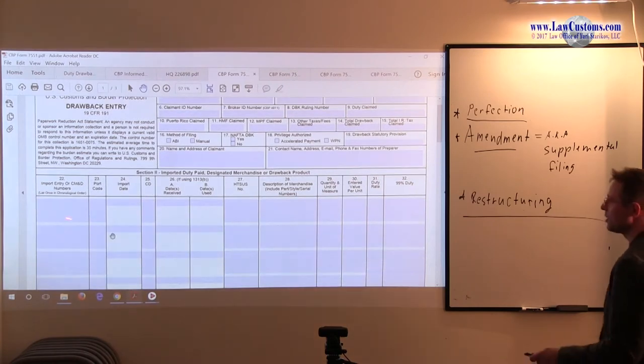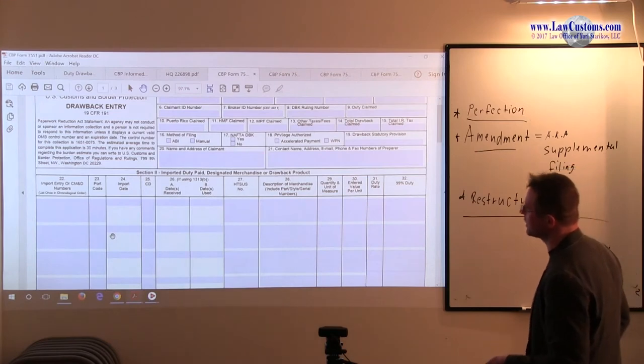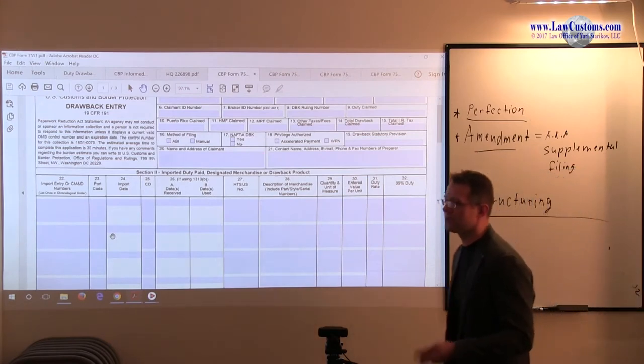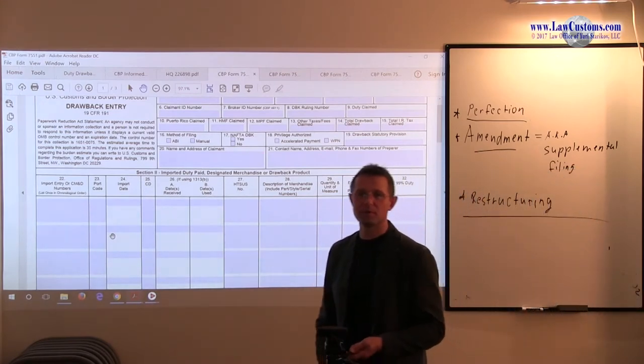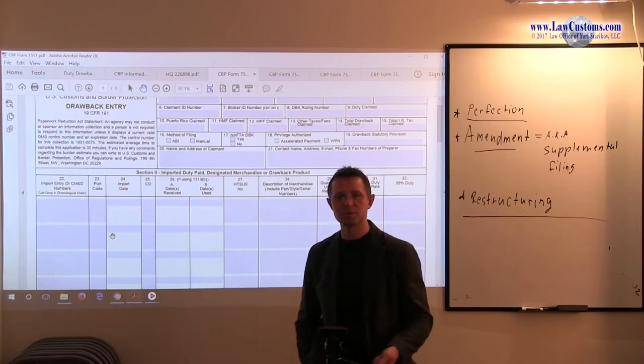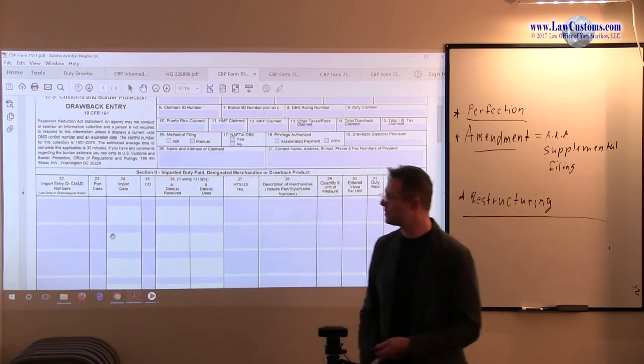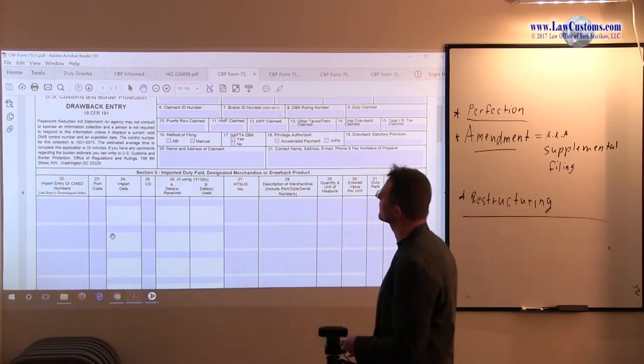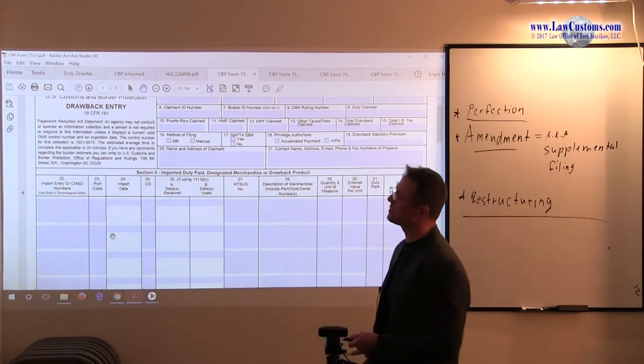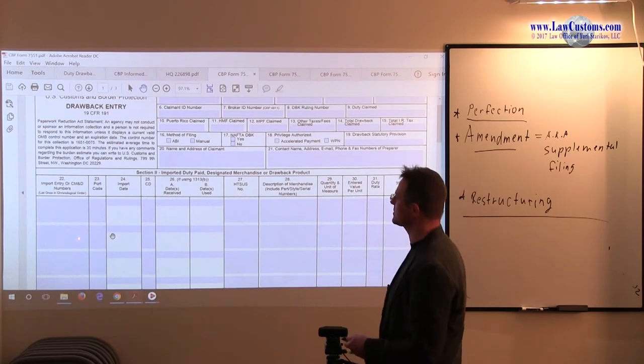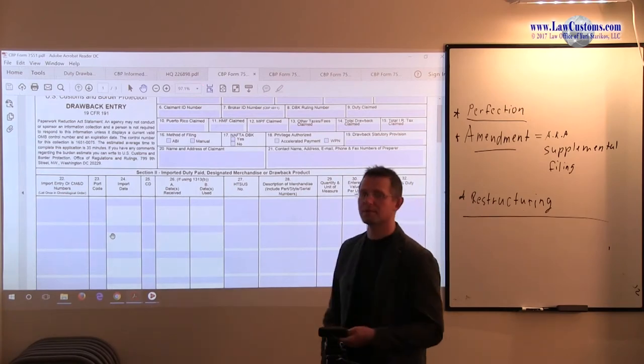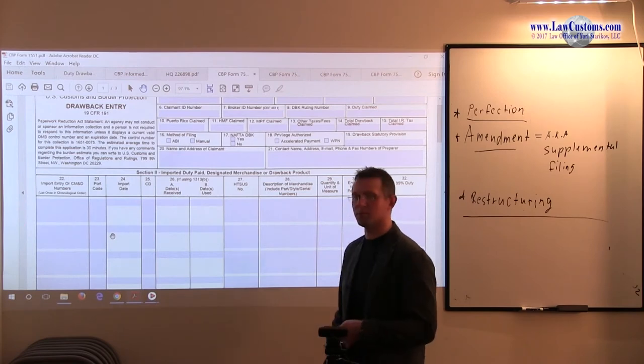For example, on CBP form 7551, the drawback entry, you may be filing only one line item per drawback entry. You may do that because for whatever reasons, it's easier for you to keep the data, easier for you to do the accounting thing. All right, no problem for you.